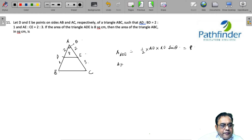So area of triangle ABC must be 1/2 × AB × AC × sin(theta), and let's say this is equal to x.